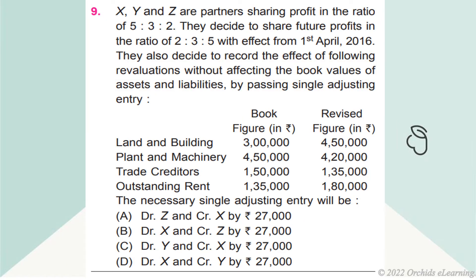X, Y, and Z are partners sharing profit in the ratio of 5:3:2. They decide to share future profits in the ratio of 2:3:5, with effect from 1 April 2016. They also decide to record the effect of the following re-evaluations, without affecting the book values of assets and liabilities, by passing a single adjusting entry.